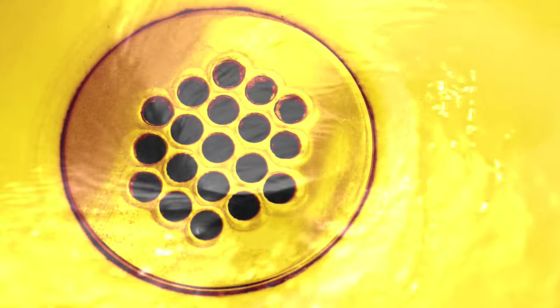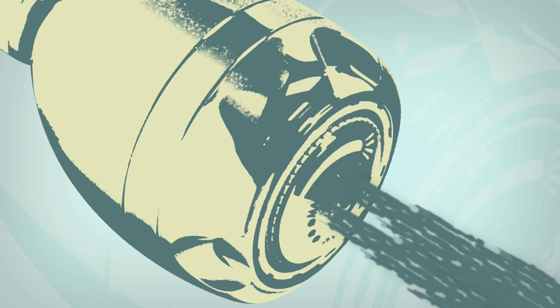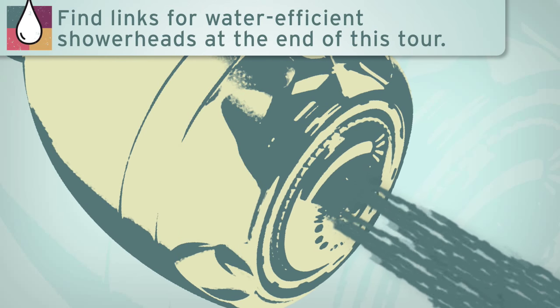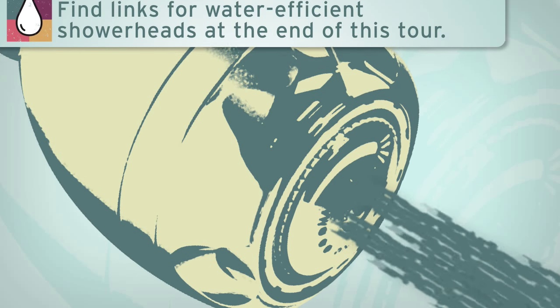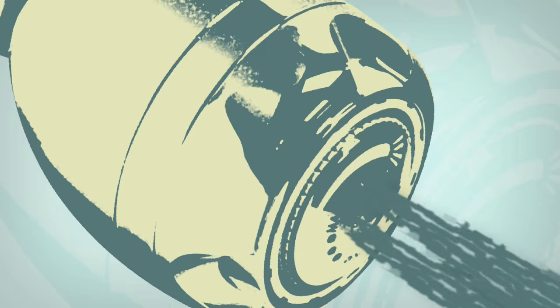Another great way to save water in the shower is to replace old showerheads with a newer two-gallon-per-minute model. The average household can reduce their water use by over 2,000 gallons a year with these low-flow heads. What's more, they save energy as well because a lot of the water you save in the shower is hot water.